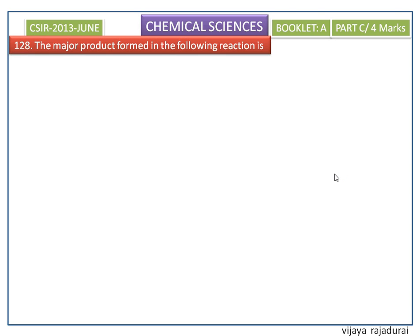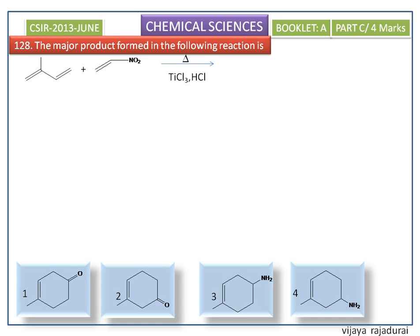The major product formed in the following reaction is asked; the options are shown here. In this reaction the diene is in the S-trans form. First, we have to rotate this S-trans into the S-cis (S-S) form. This is the dienophile.